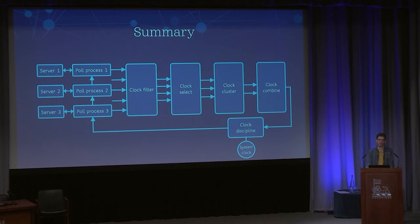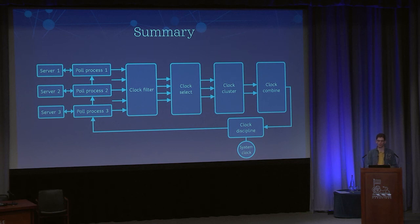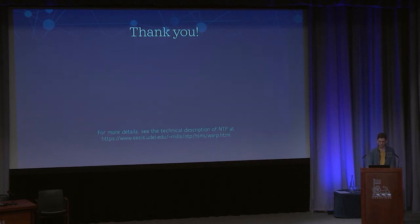To summarize: we've seen how we poll multiple different servers to get an offset and delay sample for each one. The clock filter algorithm chooses the best sample for each server and determines which servers are selectable. The clock select algorithm determines which sources are true chimers and which are false tickers. The clock cluster algorithm trims the set of true chimers down to a set that's closely clustered together. And the clock combine algorithm combines these into a single offset value which we use to adjust our system clock. That's been a tour of the NTP algorithm — thank you very much.